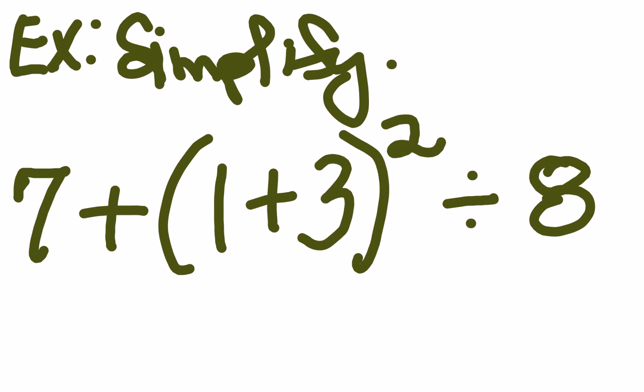Next example. Simplify 7 plus, in parentheses, 1 plus 3, close parentheses, to the power of 2, then divide it by 8. You recall the order of operations told us to work inside of any grouping symbols first. So what we have here, inside the parentheses, we have some grouping symbols that we could totally go to first. So we have this 1 plus 3 that we could look at first. And so what is 1 plus 3? That is going to be 4. So we'll have, carry down your equal sign, bring down 7 plus.